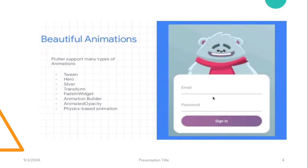Flutter also provides beautiful animations. There are many types of animations provided by Flutter, which are Tween, Hero, Sliver, Transfer, Fade In Widget, Animation Builder, Animated Opacity, Physics Based Animations, and so on. Throughout this course, we are going to explore a few of them as well in our Flutter applications.